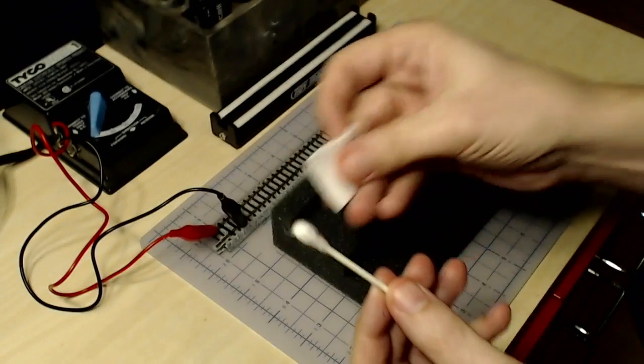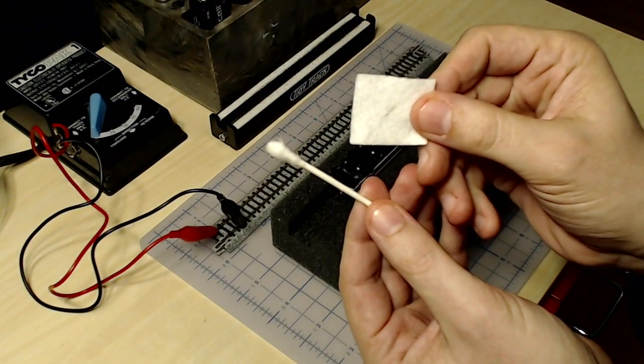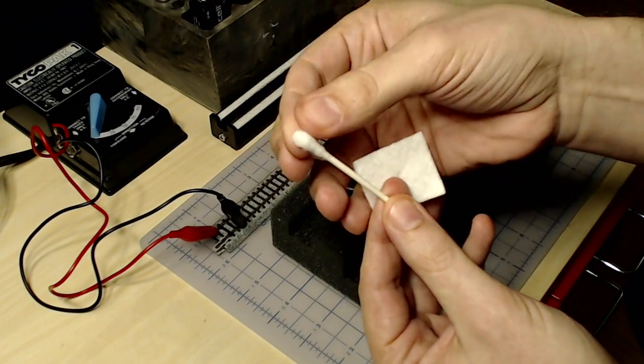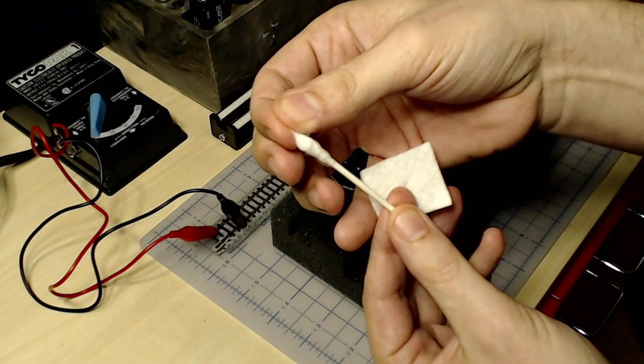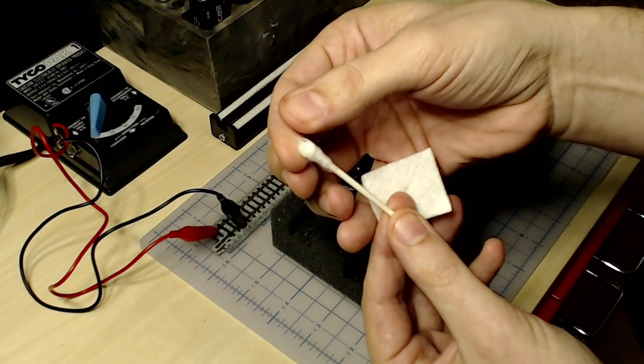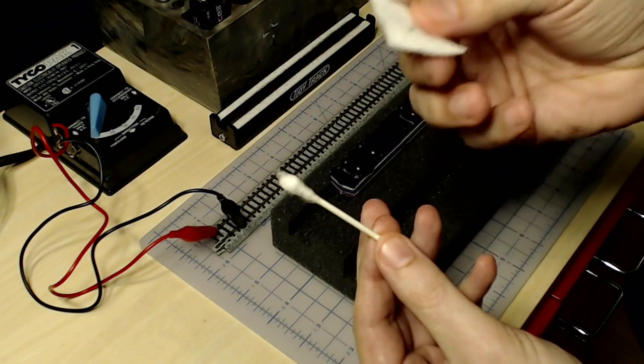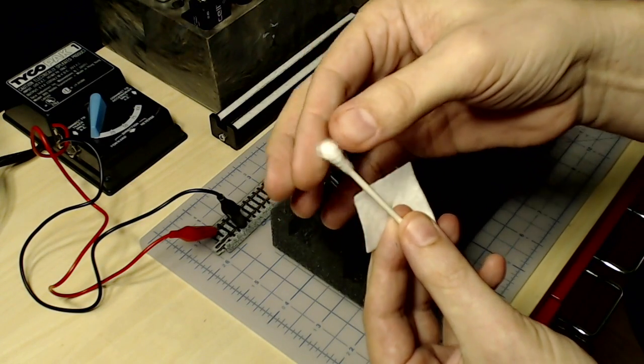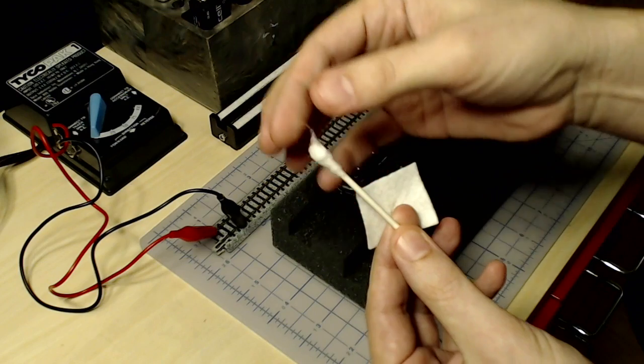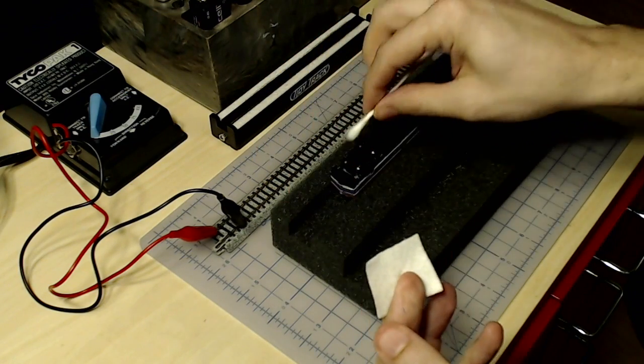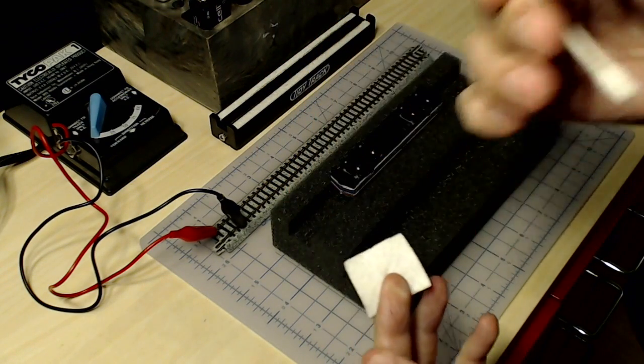The problem is that just like the pad, this cotton swab has a lot of very fine fibers, and for the same reasons as the pad, this is kind of a harmful thing to have next to the moving gears of that locomotive, so I've stopped using this.